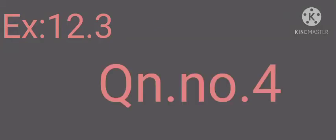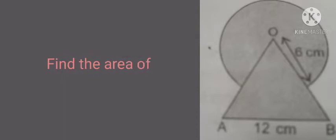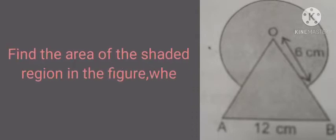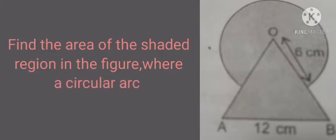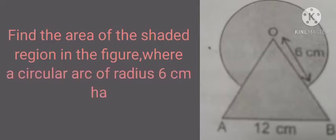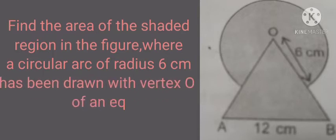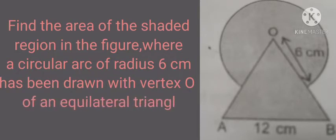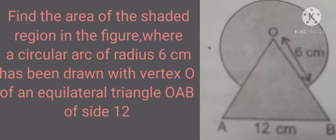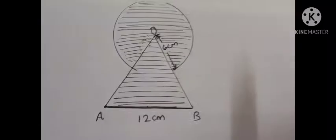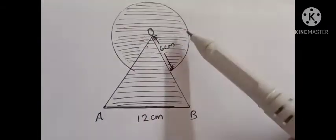Exercise 12.3, Question 4. Find the area of the shaded region in the figure where a circular arc of radius 6 cm has been drawn with vertex O of an equilateral triangle OAB of side 12 cm as center. This is the figure given in the question.